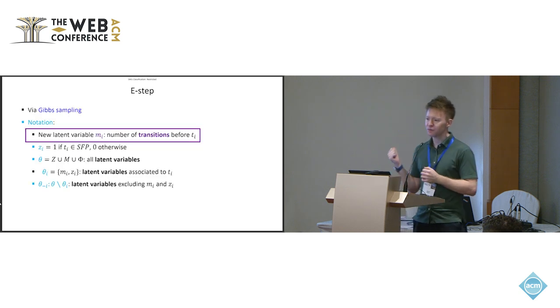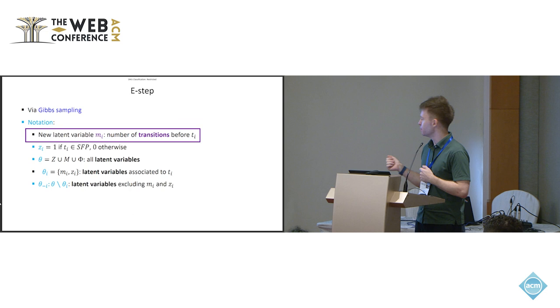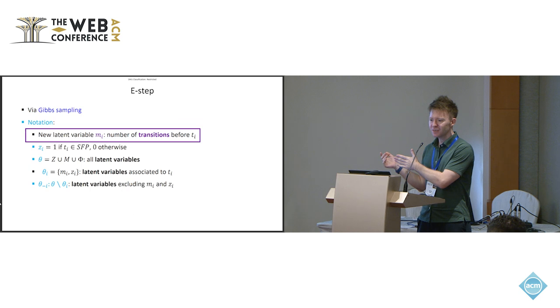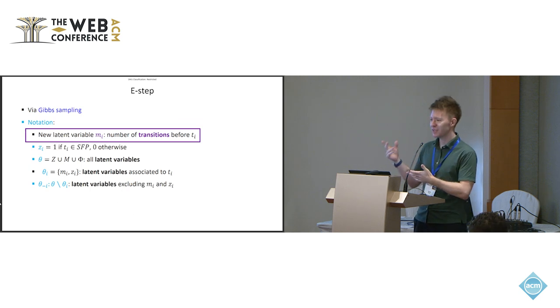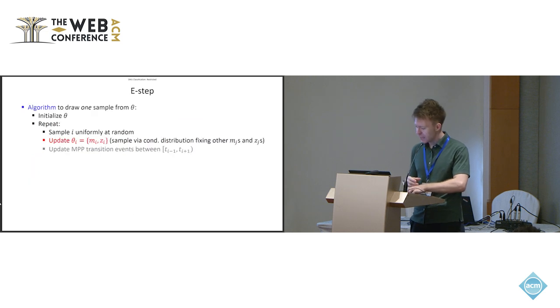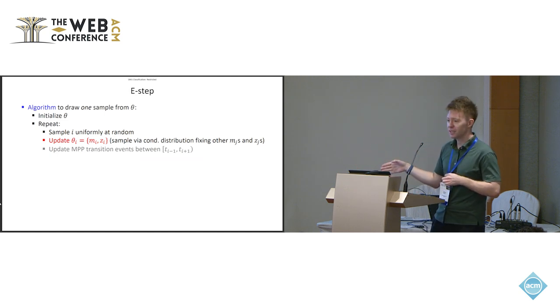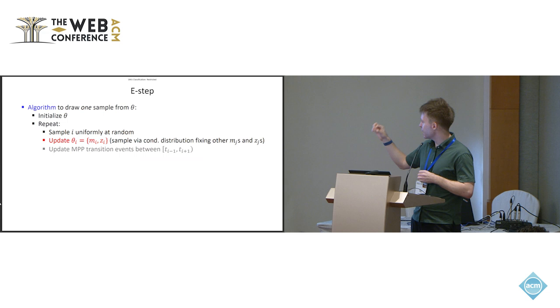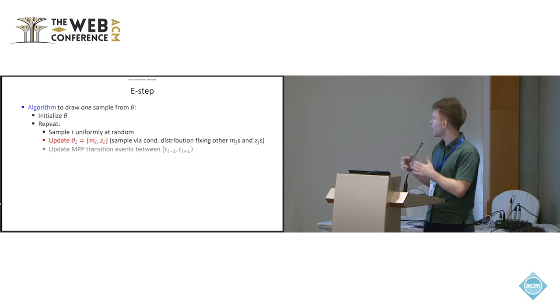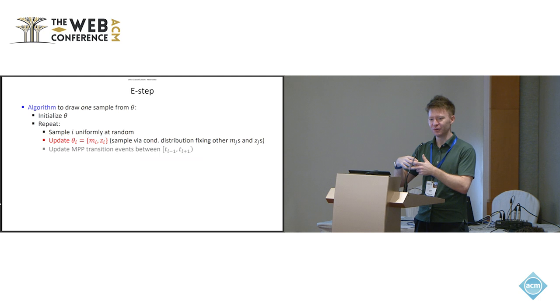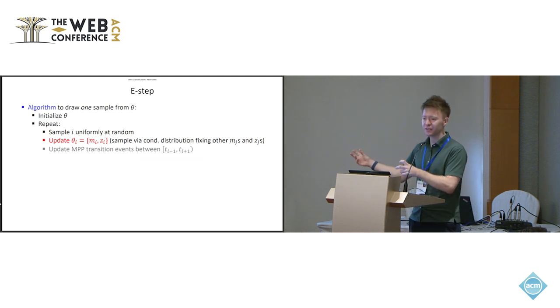So we're going to do this here. But to do this, we need to introduce one additional random variable, which is the number of transitions before T_i. So it's a little bit redundant, because you already have the information in the transitions phi. But it's easier to separate the variables if we do this this way. And so this is the algorithm. We initialize all the latent variables, then we pick a random timestamp T_i uniformly at random, and then we update the M_i and Z_i, so M_i is the number of transitions up to there, and the Z_i, whether or not it belongs to the stable audience. And this is conditioned on all of the other M's and all the other Z's.